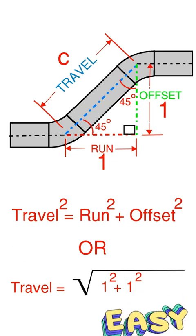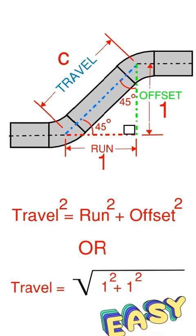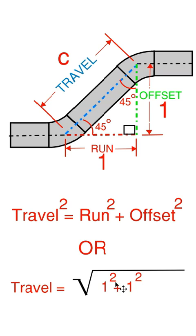Let's keep this real simple. Let's make the offset 1 and the run 1. So 1² + 1², all under the square root key, will equal our travel.